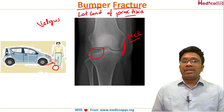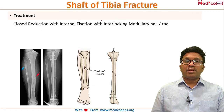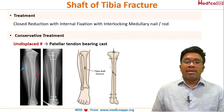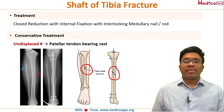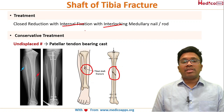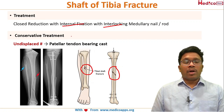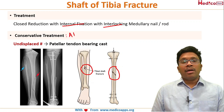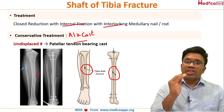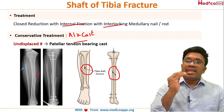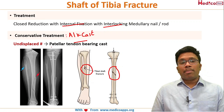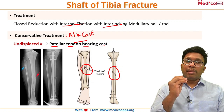For fracture of the shaft of the tibia, the treatment of choice is intramedullary fixation with an interlocking nail. Conservative treatment involves applying an above-knee cast initially, and once the fracture is sticky, converting it to a patellar tendon bearing cast.